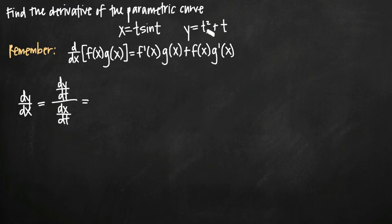So the derivative of our function y with respect to t, we're just using power rule to take the derivative of t squared plus t. So the derivative will be 2t plus 1, that's an easy one.